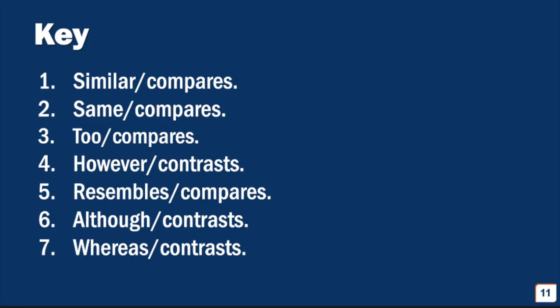So now that you have your answers, here is the key. Number one, we use the word similar, so it compares. Number two, we used the word same. Again, it compares. Number three, we used the word too. It compares again. Number four, we use the word however. Here instead it contrasts. Number five, we used the word resembles. Again, it compares. Number six, we used the word although. So here it contrasts. And number seven, we used the word whereas. And here the sentence contrasts.